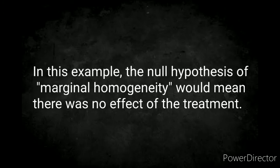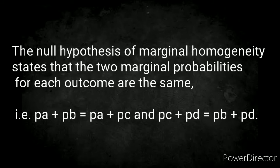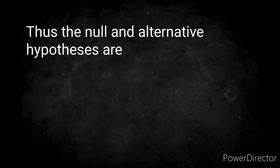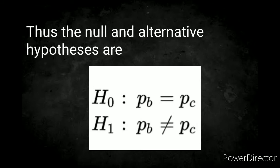In this example, the null hypothesis of marginal homogeneity would mean there was no effect of the treatment. The null hypothesis of marginal homogeneity states that the two marginal probabilities for each outcome are the same. For example, probability of A plus probability of B equals probability of A plus probability of C, and probability of C plus probability of D equals probability of B plus probability of D. Thus, the null hypothesis states probability of B equals probability of C, while the alternative hypothesis states probability of B is not equal to probability of C.